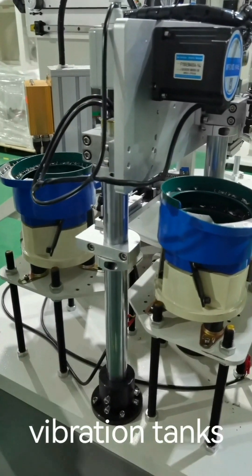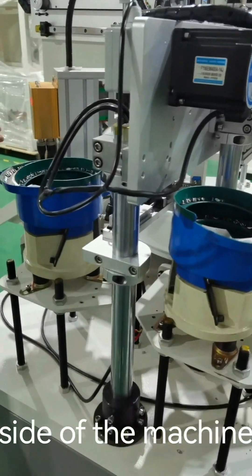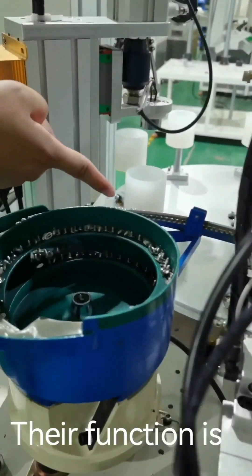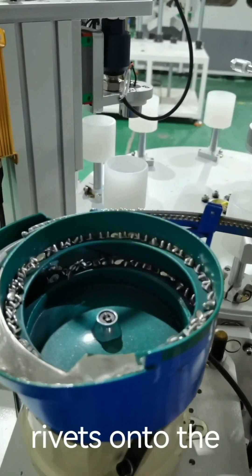There are two vibration tanks on the back side of the machine. Their function is to dispense the sealant onto the trays.